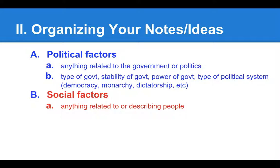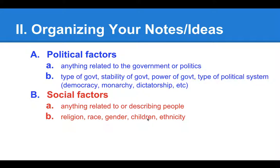Uppercase B is social factors. This is anything related to or describing people — whenever you're talking about people and how they interact with one another, it's a social factor. You'll be reading a lot this year about social interactions. Examples include religion, race, gender, children, and ethnicity. If you encounter anything having to do with religion, race, gender, how children are treated, or the cultural background of people, that is a social factor.